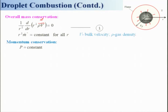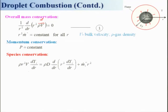For momentum conservation in this one-dimensional situation, there is no need to discuss it further because pressure remains constant, as we have seen for premixed flames. For species conservation, the equation has a convection term: ρr²v (dY_i/dr), where Y_i is the mass fraction of the i-th species. The diffusion term is: (d/dr)[r² ρD (dY_i/dr)], and the source term is ṁ‴_i r², representing the volumetric reaction rate.